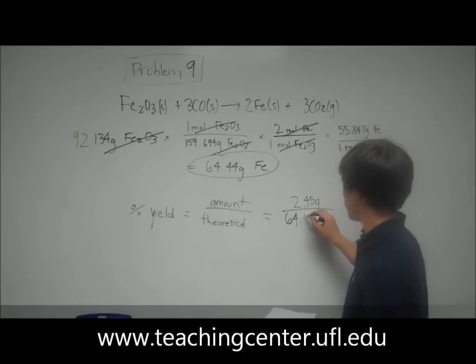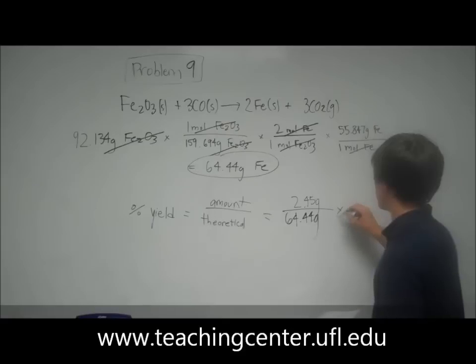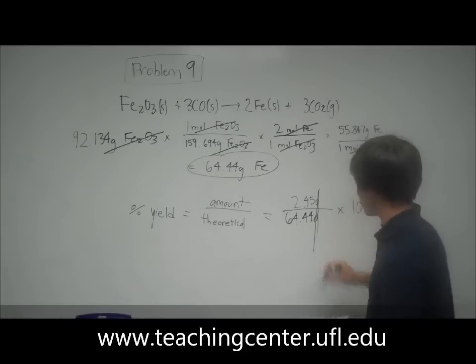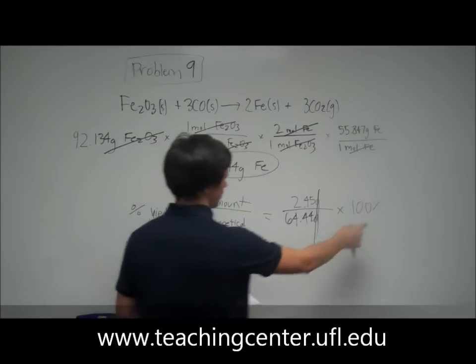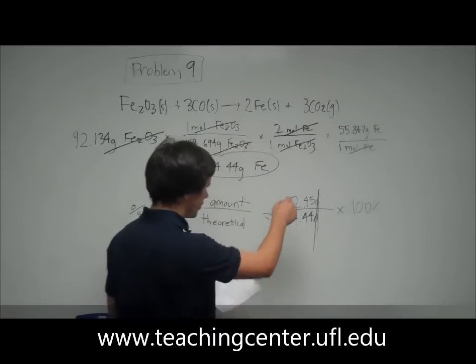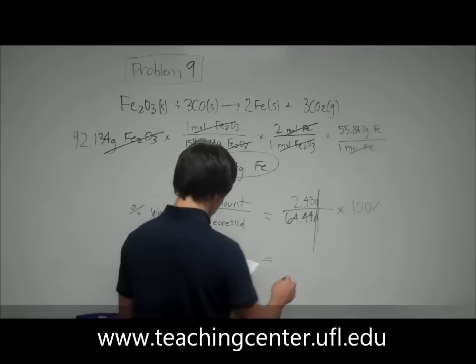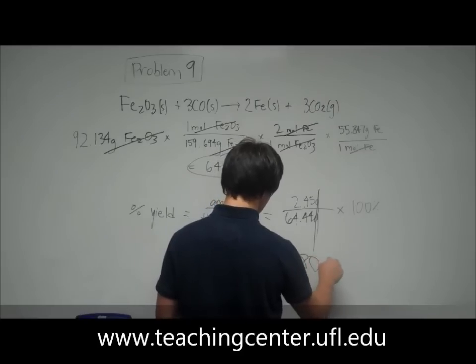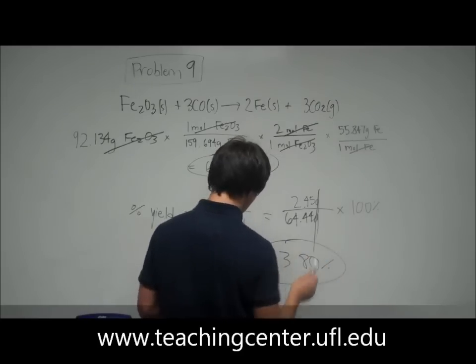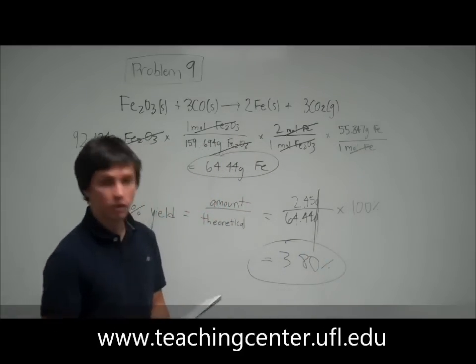So over 64.44 grams. Now it does say percent yield, so you're going to want to multiply this by 100%. But either way, notice that the grams cancel out. So this number does not have any units except for that percent. And when you do that and multiply it by 100, you're going to get 3.80%, which is answer choice number 1 on your test.